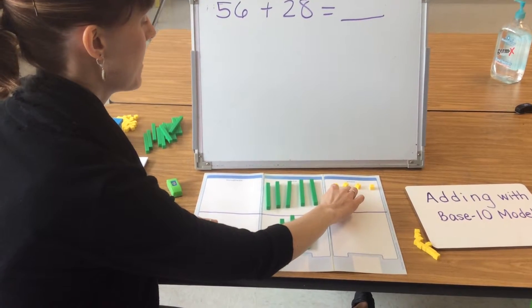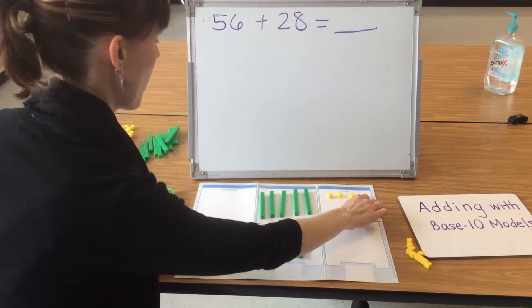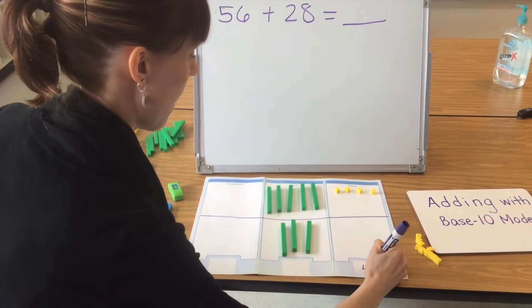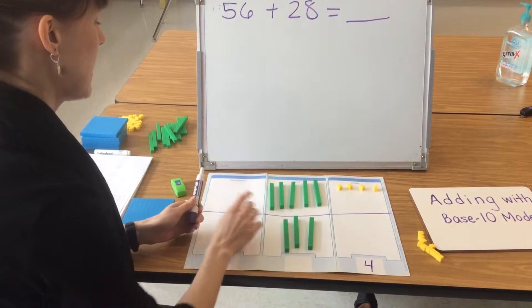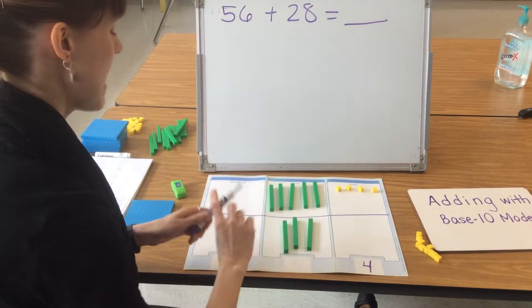I then count the ones that I have remaining: 1, 2, 3, 4. After I count my ones, I count my tens: 1, 2, 3, 4, 5, 6, 7, 8.